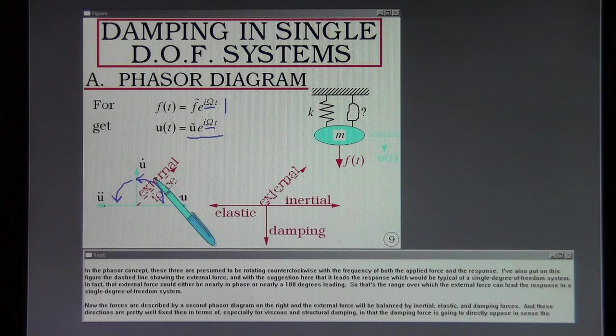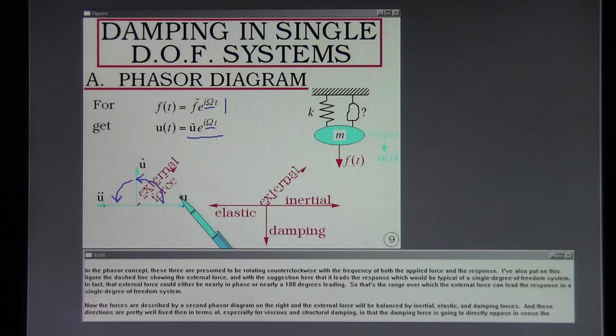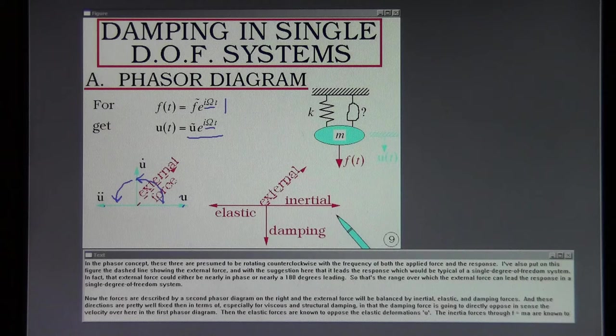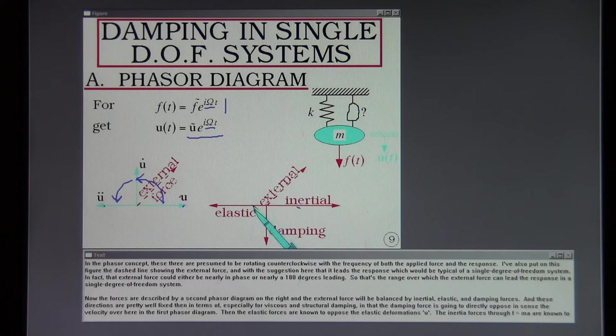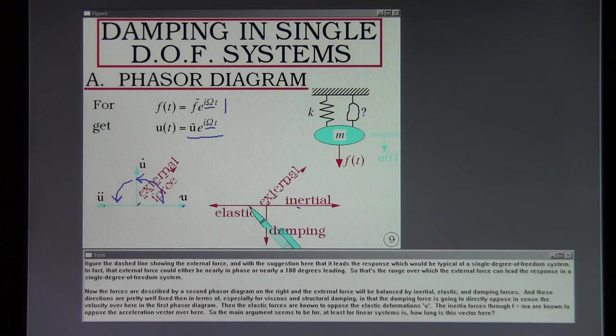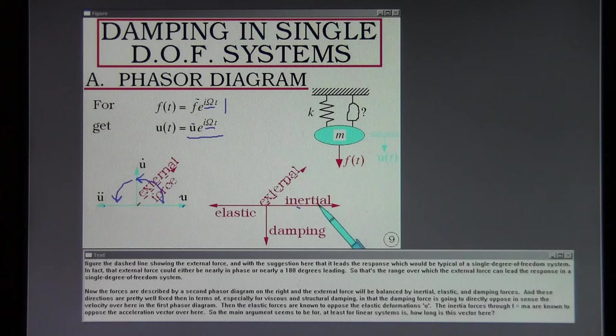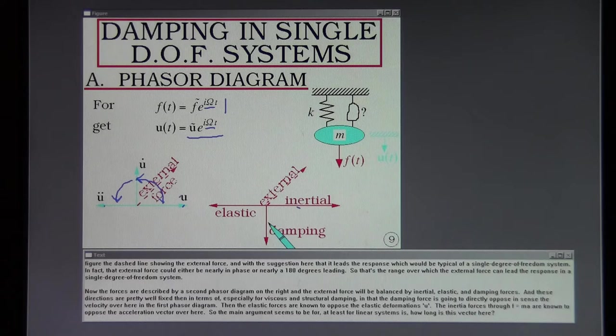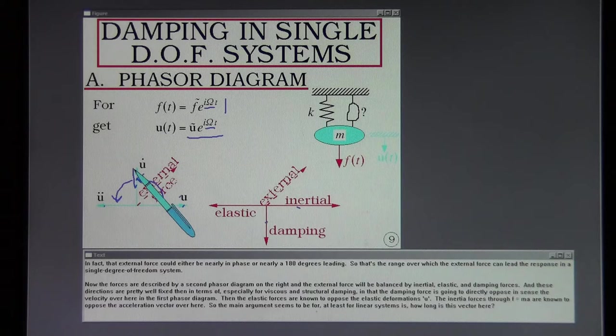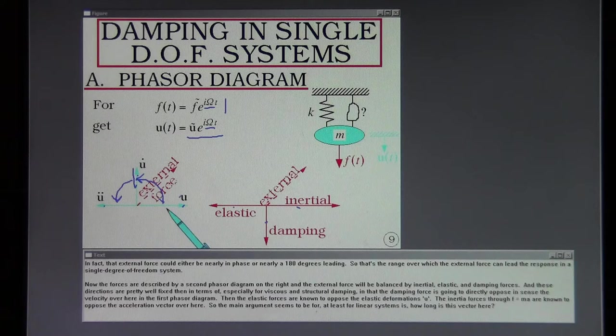In fact that external force could either be nearly in phase or nearly 180 degrees leading. So that's the range over which the external force can lead the response in a single degree of freedom system. Now the forces are described by a second phasor diagram on the right and the external force will be balanced by inertial, elastic, and damping forces. And these directions are pretty well fixed then in terms of especially for viscous and structural damping in that the damping force is going to directly oppose in sense the velocity over here in the first phasor diagram.